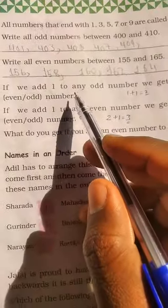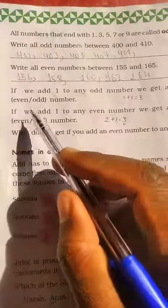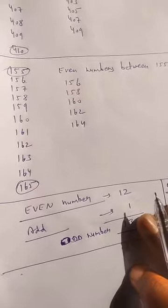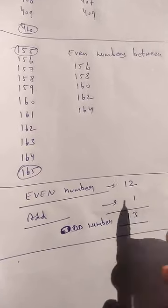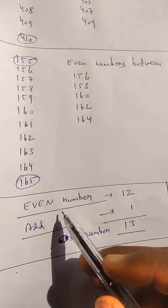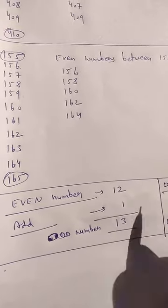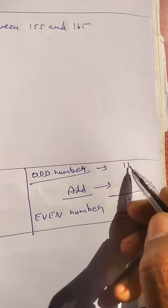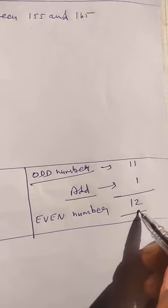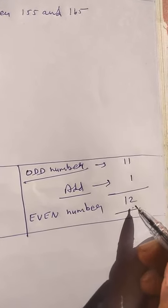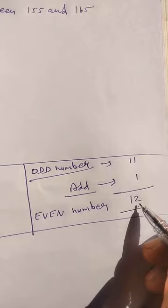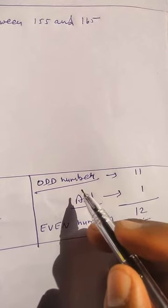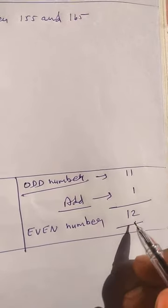अब इसमें बोला गया है: if we add 1 to any odd number, we get an even number. Odd number का end 1 से होता है, तो हमने 11 लिया और उसमें 1 add किया — result मिला 12. 12 का end 2 से होता है, जो even number है। So, if we add 1 to any odd number, we get an even number.